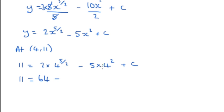Take away 80 (16 times 5), take away 80 plus c. So 11 = -16 + c. And so c = 27.